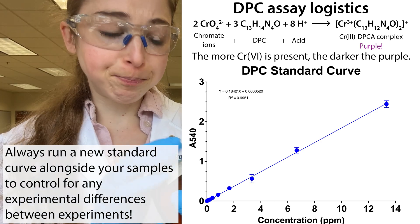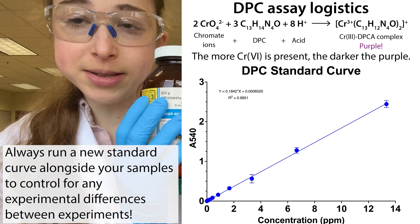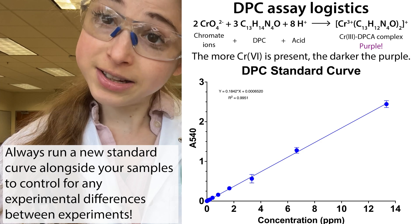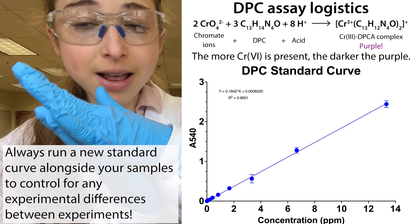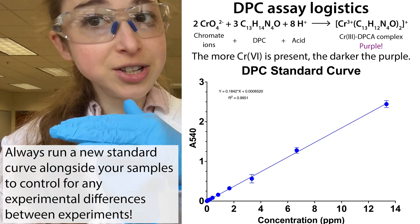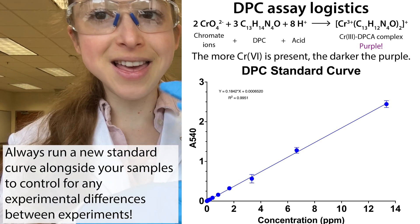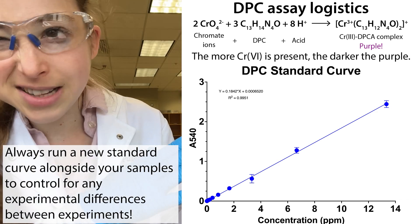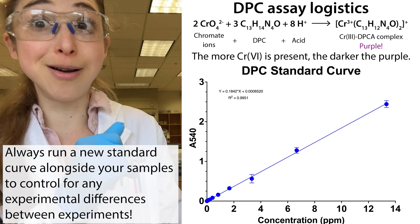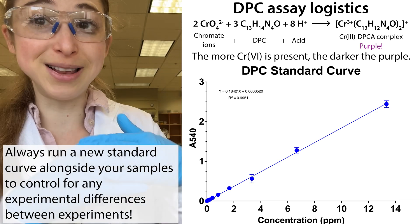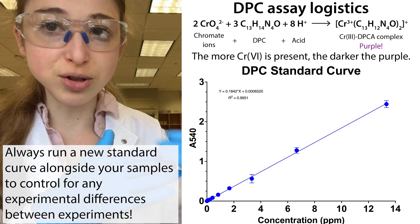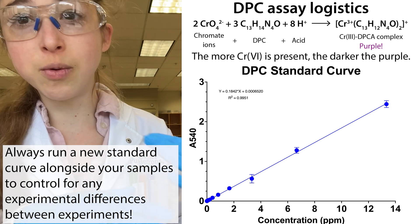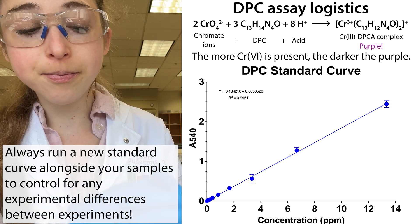We take chromium-6 and serially dilute it. We then make a trend line, get the equation of the trend line, and calculate the chromium concentration. From past experiments, we know the linear range, so we pre-adjust by doing a one-to-three dilution of what we start with.